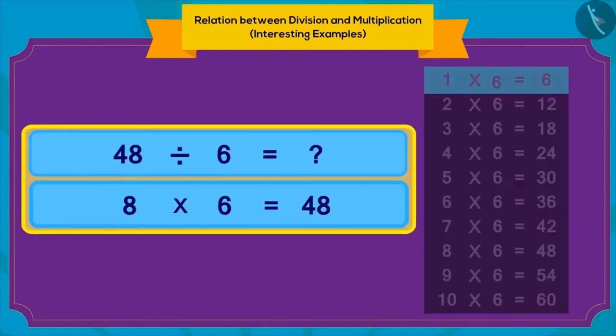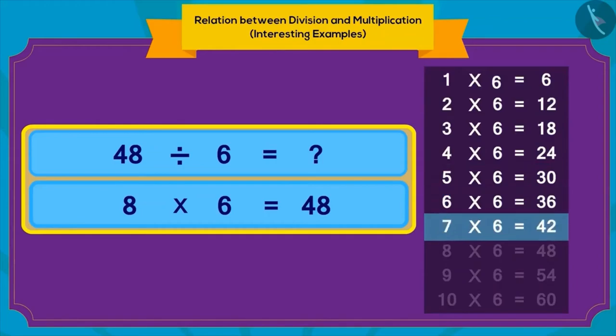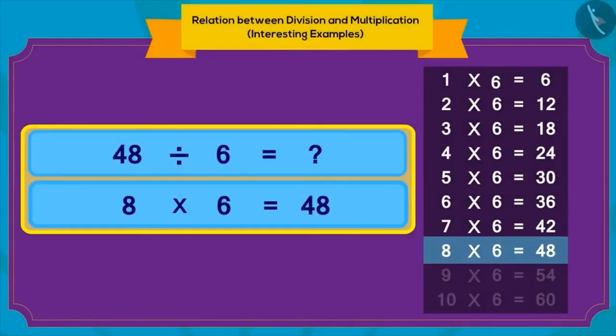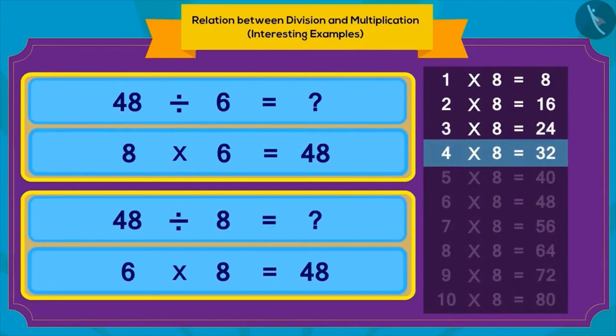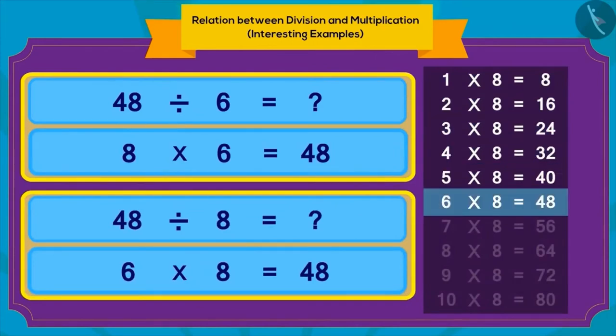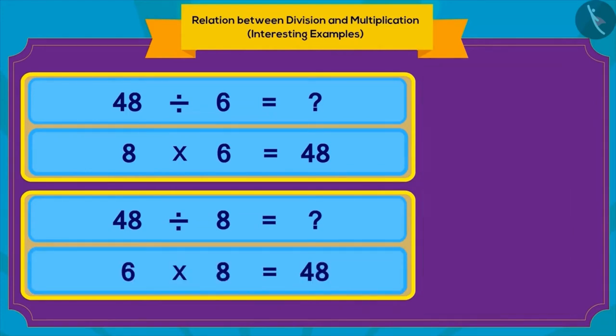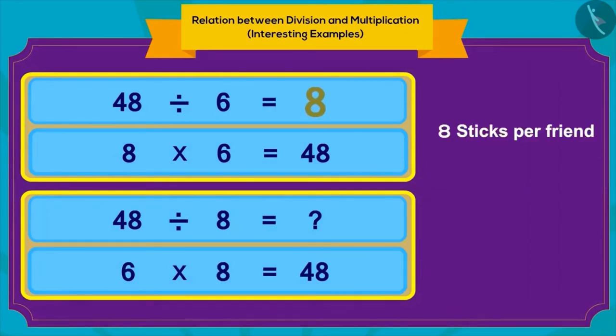So, children, in the table of six, what do we multiply with eight to get 48? Absolutely correct! Six times eight is 48. And, in the table of eight, what times eight equals 48? Correct again! Eight times six equals 48. In this way, we can use multiplication to figure out the answer for division. For example, eight sticks per friend or six friends, it can be found out.